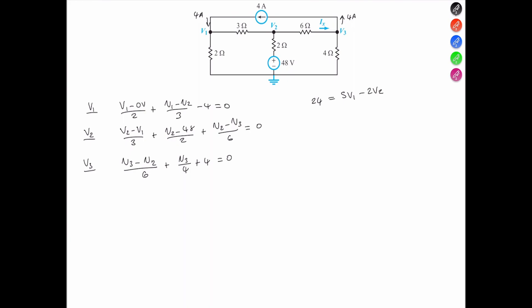Simplification of another is 144 equals negative 2 V1 plus 6 V2 minus V3.